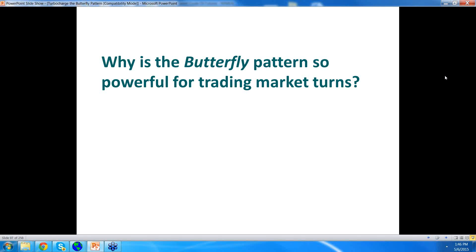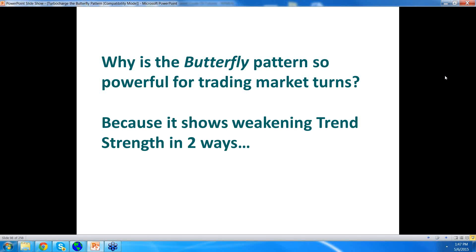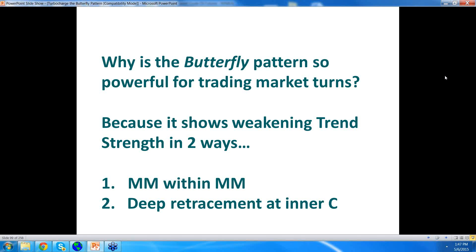Let's ask this as a review: why is the butterfly pattern so powerful for trading market turns? It shows weakening trend strength in two ways. The first way is the measured move within the measured move configuration. The second way is that you must have a deep retracement at the inner point C — I like it to be deep, about two-thirds, sixty-six percent or more. It can be as deep as a double bottom, but we want that inner pattern to be deep. You can Google butterfly patterns — many people have their versions, sometimes called the crab or the bat. But essentially it's a measured move within a measured move, a weakening chart pattern. The inner one has a deep point C. It works in all chart patterns, all time frames, and all markets.